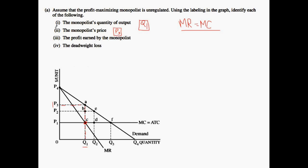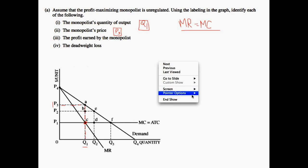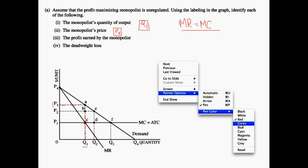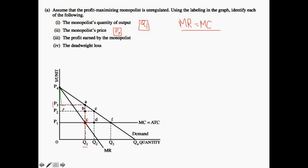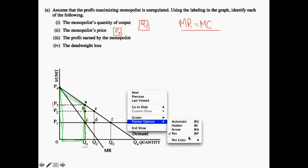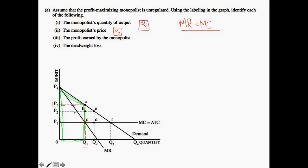Now let's move on to Part 3A — the profit earned by the monopolist. We want to think about what happens when the monopolist sets MR equal to MC. The monopolist is then operating with this sort of trapezoid shape, and we want to break down this trapezoid into its component parts. The consumer has a consumer surplus because this is the difference between what they're willing to pay and what they actually pay — this is the amount that consumers gain from the interaction.